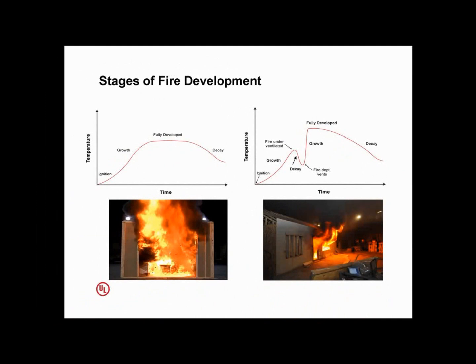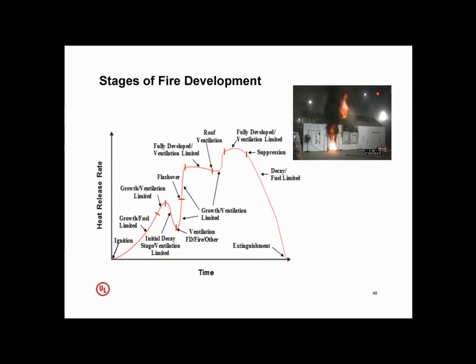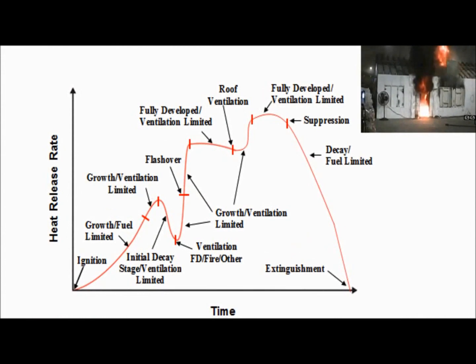This is even too simple. Here's a fire growth curve where two things happen: the front door gets opened and a hole gets cut in the roof. It's important to know there isn't just one growth stage, one decay stage, or one fully developed stage. The fire ignites, it grows, and at some point transitions from a fuel-limited fire to a ventilation-limited fire. As it makes that transition, it's running out of oxygen, and then you get your initial decay stage. From this point on, we're ventilation-limited — producing more fuel than we have oxygen to burn.